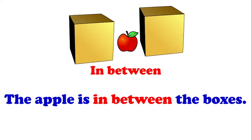Next picture. What can you see? Very good — an apple and two boxes. Where is the apple? The apple is in between the boxes. In between.